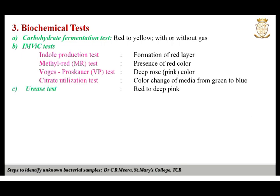The urease test is used to determine the ability of microorganisms to degrade urea by the production of the enzyme urease. The nitrate reduction test is performed to determine the ability of some microorganisms to reduce nitrates to nitrites or beyond the nitrite stage; the enzyme nitrate reductase possessed by organisms reduces nitrates to nitrites.